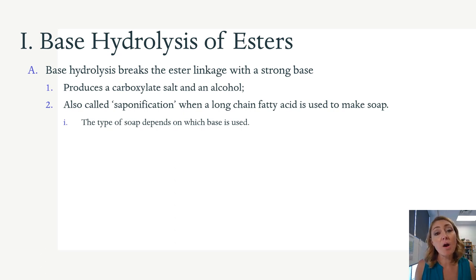In a base hydrolysis, we're also going to break the ester linkage, but we're going to do this with a strong base. So with a base hydrolysis, we're actually producing a carboxylate salt and an alcohol. We're not reforming the carboxylic acid.